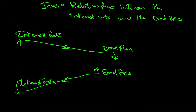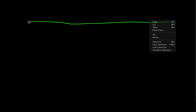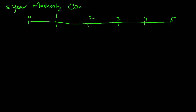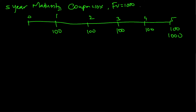Let's take an example. Imagine you have bought a bond with a maturity of five years — a five-year bond. The coupon is 10% and the future value is 1000. 10% of 1000 comes to 100 per annum, so every year you will get 100 as coupon: 100, 100, 100, 100. And at the end of the fifth year you will also get back the principal amount of 1000.